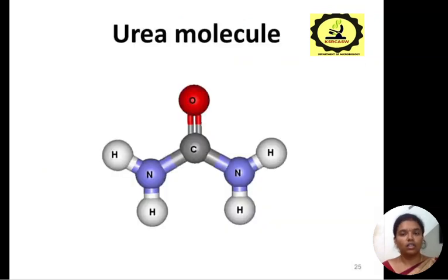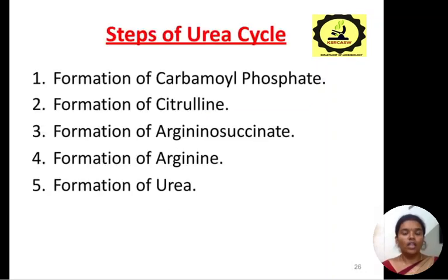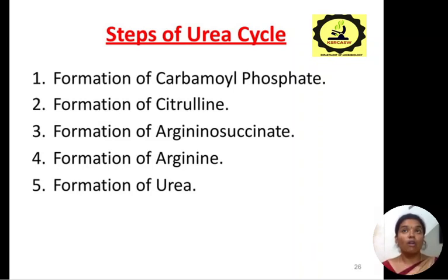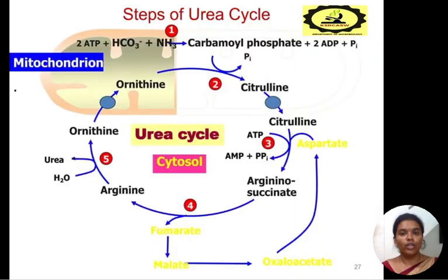This is the structure of the urea molecule. It contains two nitrogen atoms, two NH2 groups, and one carbon group. There are different steps in the urea cycle: formation of carbamoyl phosphate, formation of citrulline, formation of argininosuccinate, formation of arginine, and formation of urea.